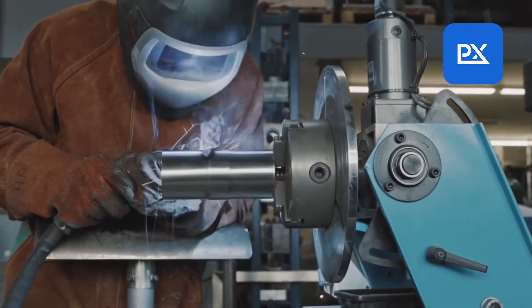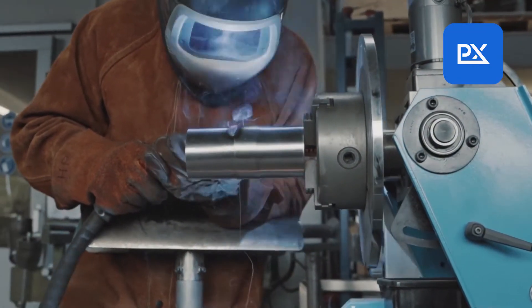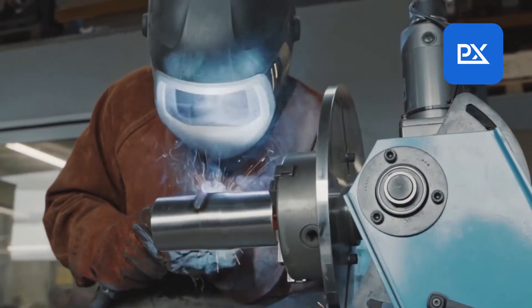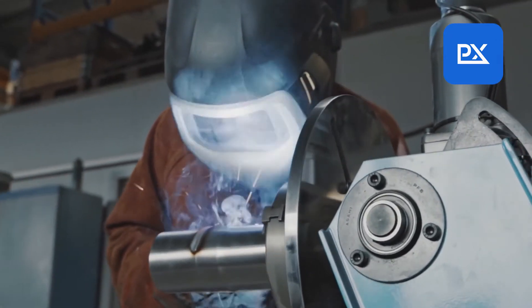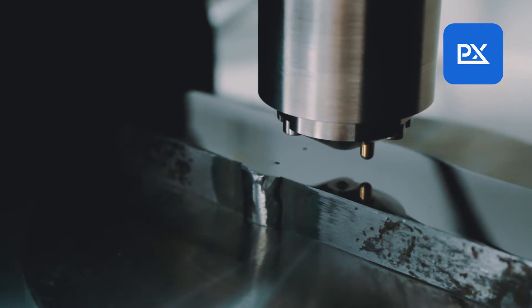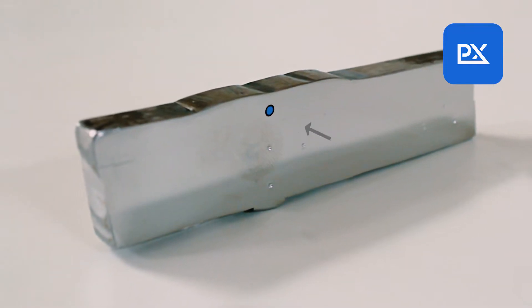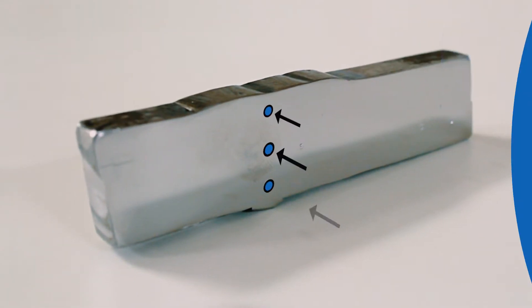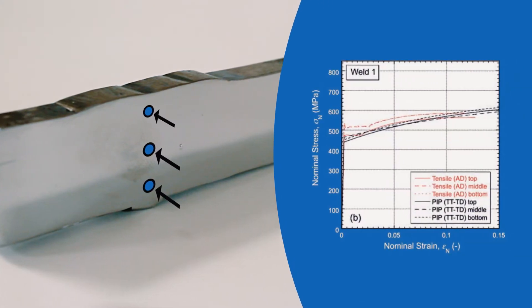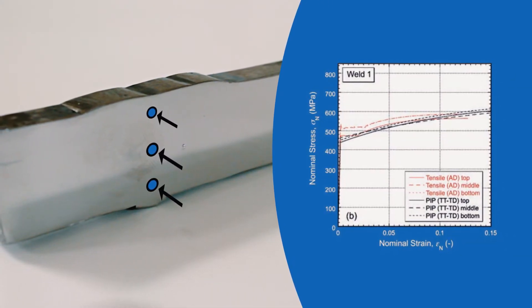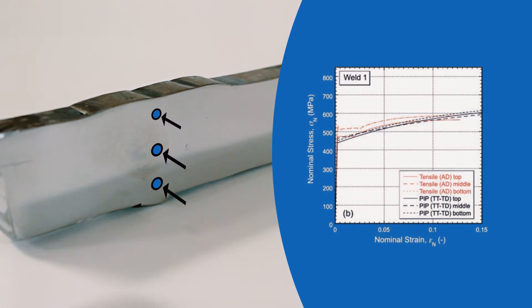This afternoon I'd like to run through a particular application of the PIP technology, which is using it to explore the properties in and around welds. Welds are very important in terms of their mechanical properties, and those properties vary quite sharply with position in the vicinity of the weld. Being able to get a proper stress strain curve from individual regions of the weld is an important objective and very difficult to obtain by conventional uniaxial testing.